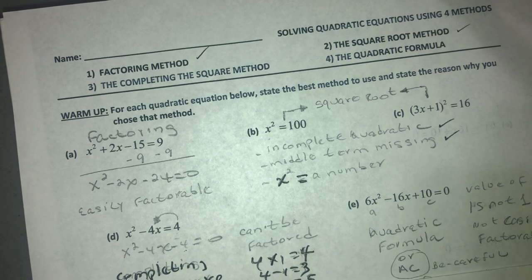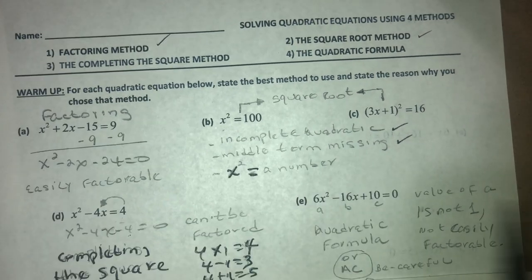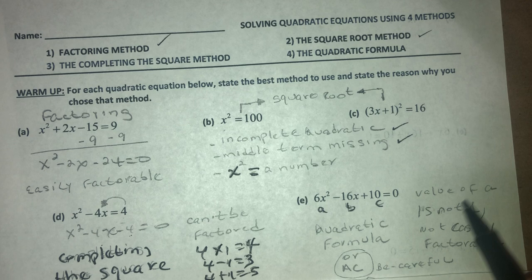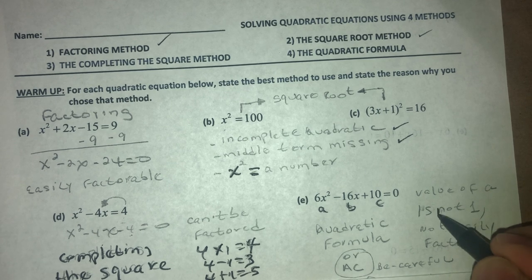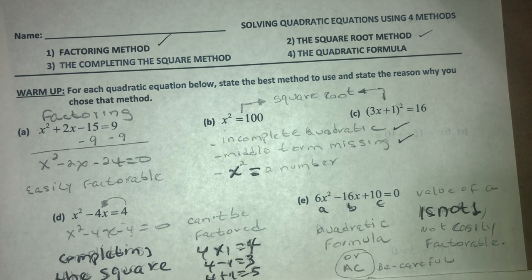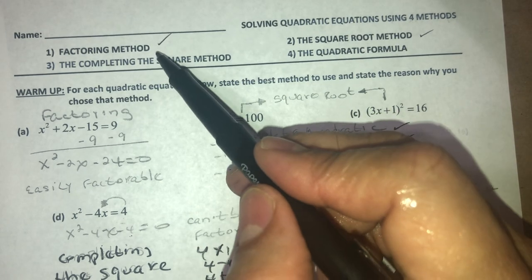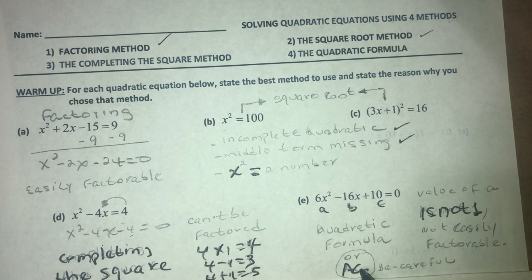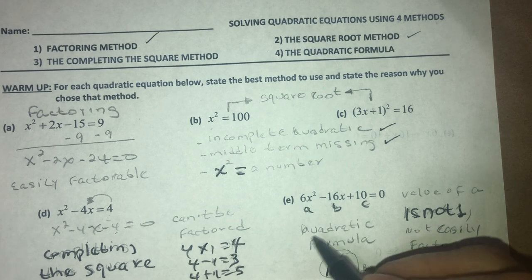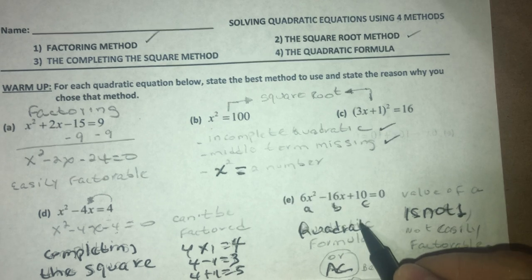For e, the value of a is not 1. When you have a leading coefficient that is not 1, you have two options — we did the AC method, same as factoring. But be careful, because sometimes AC doesn't work. The best shot here is to use the quadratic formula, so for e we're going to use the quadratic formula.